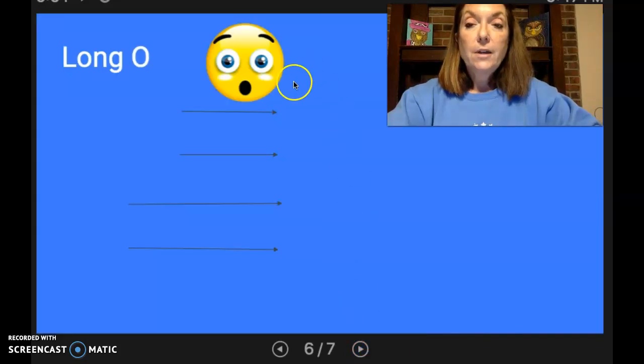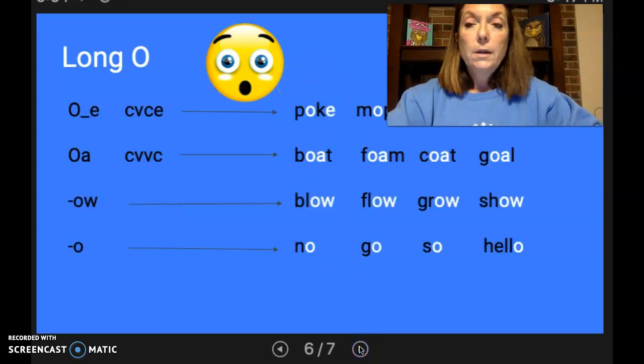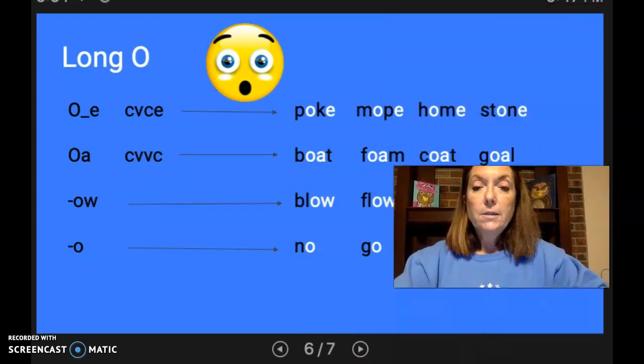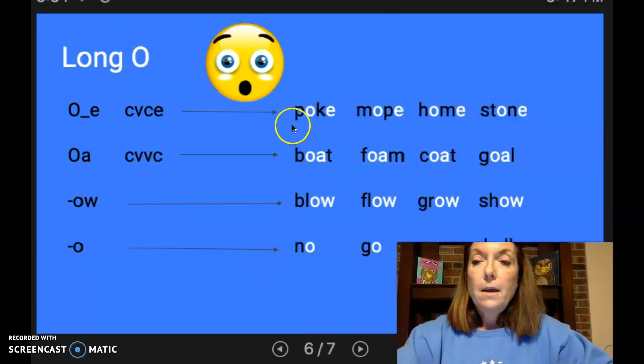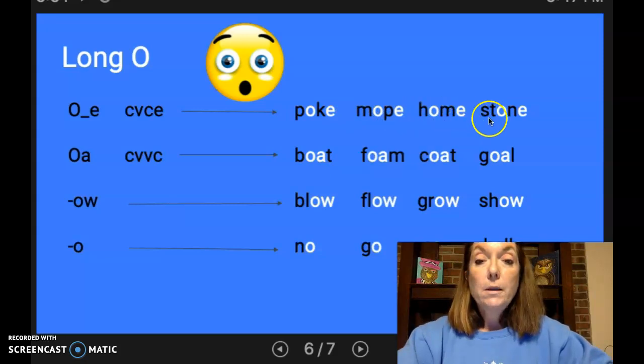Long O sound, I have the emoji that's like, oh no, because he says O. And we're going to start with the O blank E. I'll move my picture again so you can see. And we have consonant, vowel, consonant with our silent E. This word is poke, mope, which means you're kind of walking around sad. Home and stone.